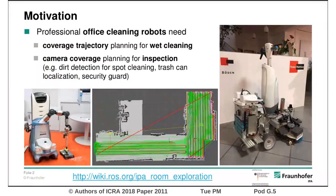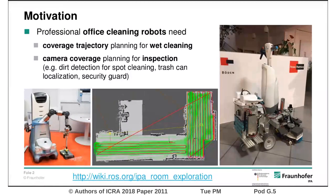An example usage of mobile robots is in professional cleaning companies. The robot can clean, for example, a bureau in the night after everyone has left the building. For this purpose, the robot needs to fulfill two major tasks: first, keeping the area clean on a daily basis by inspecting the floor and cleaning several spots if necessary; and second, wet cleaning the whole area every once in a while.